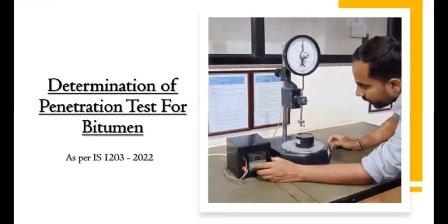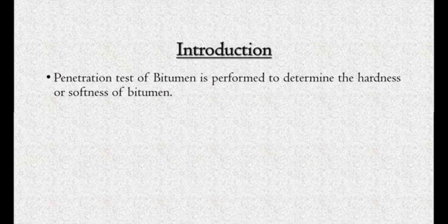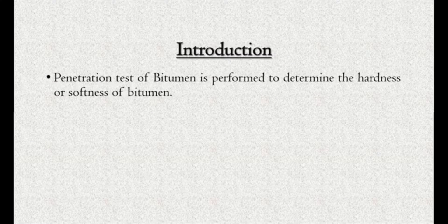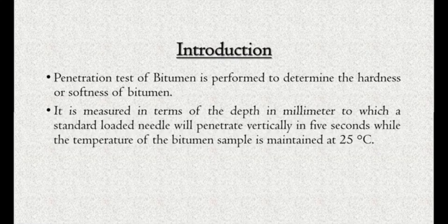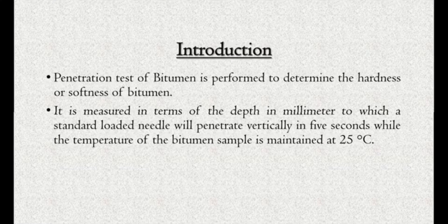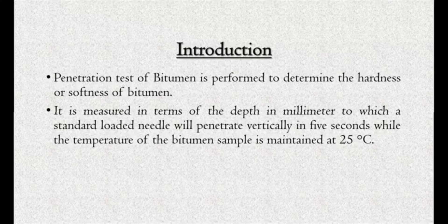Determination of Penetration Test for Bitumen as per IS 1203-2022. Introduction: Penetration test of bitumen is performed to determine the hardness or softness of bitumen. It is measured in terms of the depth in millimeter to which a standard loaded needle will penetrate vertically in 5 seconds while the temperature of the bitumen sample is maintained at 25 degrees Celsius.